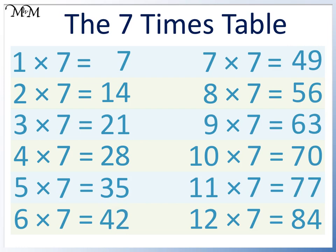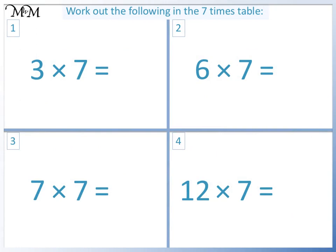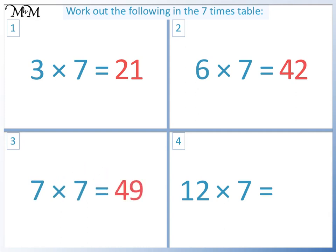Pause the video now to learn the 7 times table. Here are some questions for you to try — pause the video and have a go. Question 1: 3 times 7 equals 21; 2 plus 1 equals 3. Question 2: 6 times 7 equals 42; 4 plus 2 equals 6. Question 3: 7 times 7 equals 49; we can add 7 to 42 to get 49. Question 4: 12 times 7 equals 84; 8 plus 4 equals 12.